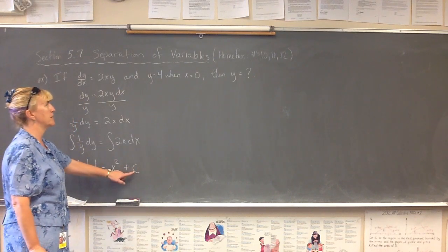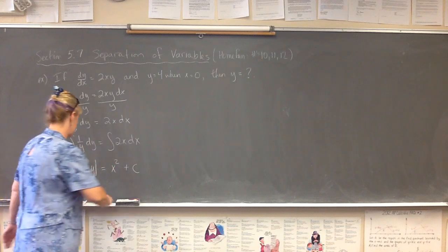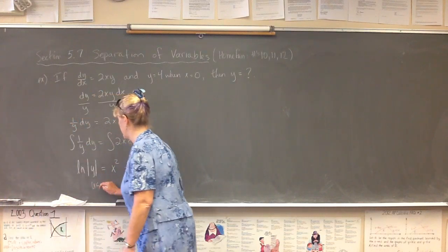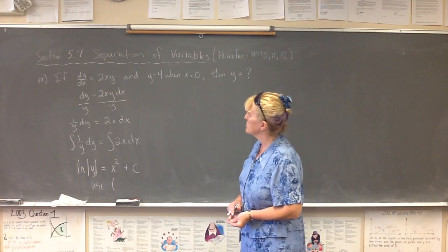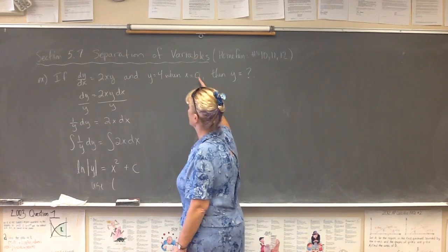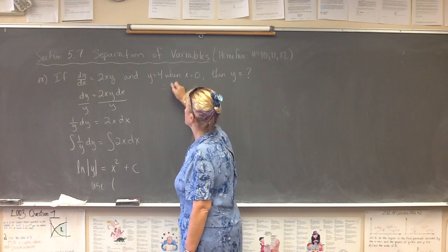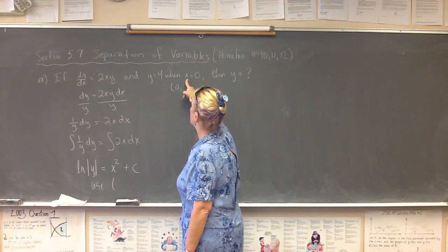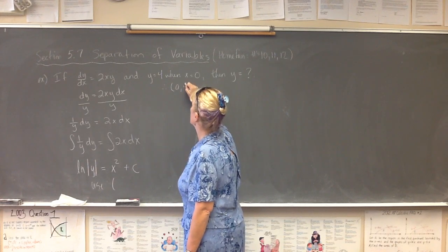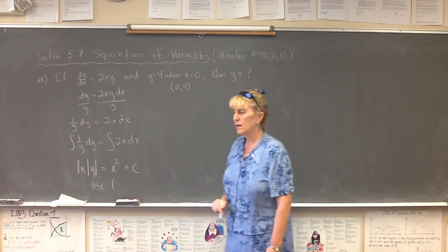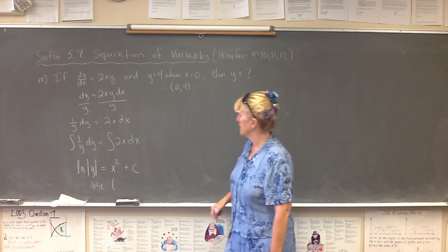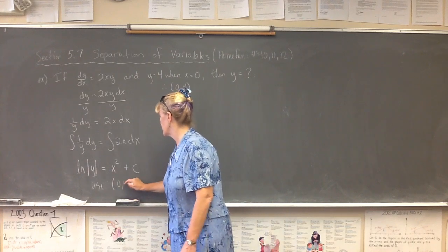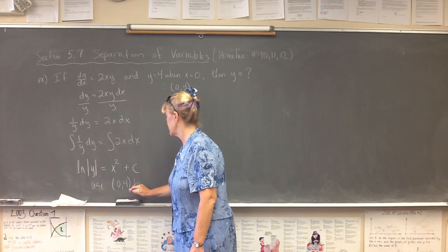And we're going to solve for c by using the given point. Okay, so use your point. And what point am I talking about? The original problem said y equals 4 when x equals 0. If y equals 4 when x equals 0, then my x, y coordinate point will be 0, 4. So I'm going to put x and y into my equation over here and solve for c. So I'm going to use 0, 4 to solve for c.